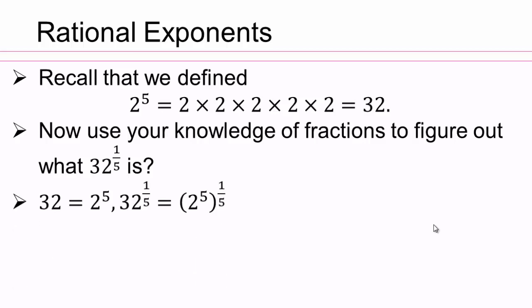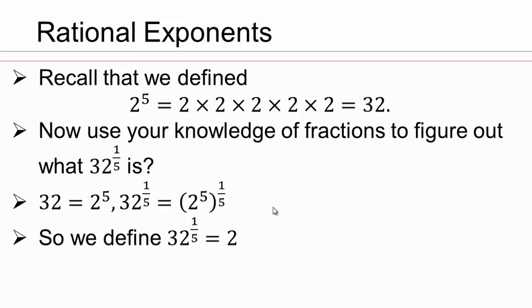Let's see what we can do here. We know that 32 is 2 to the fifth. And so 2 to the fifth, to the exponent of one fifth — we already know that if you had 2 to the fifth to the second, we multiplied those exponents. So if you do that now, what do you think will happen? We'll end up with 2. That would make sense because 32 to the power of one fifth: 2 to the fifth, when you take a power of 5, you take 5 twos.